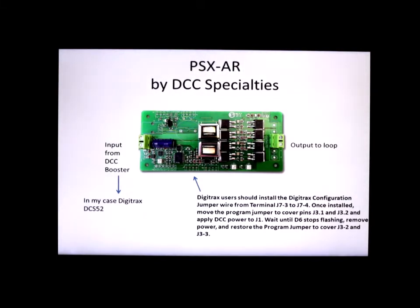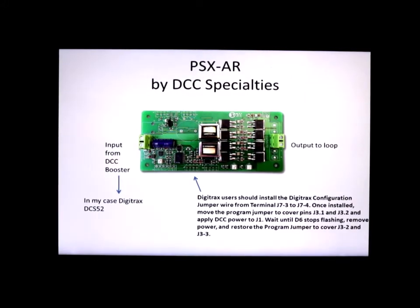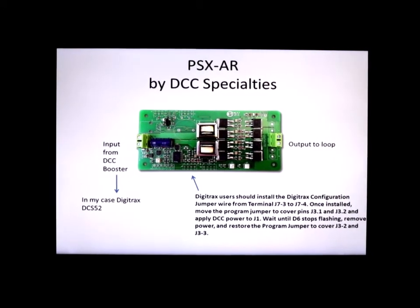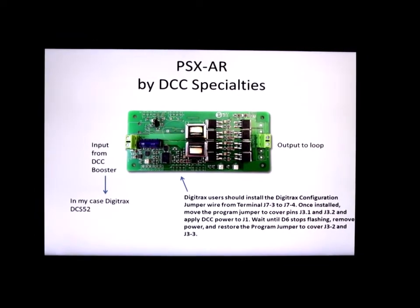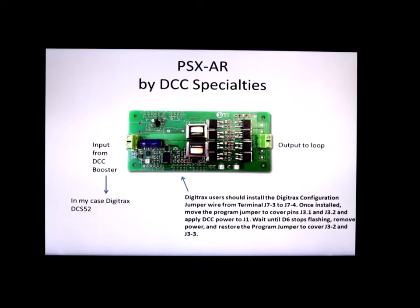There's also a note you can see here at the bottom which talks about setting up the system to work with Digitrax and how you can optimize it. That's pretty simple to do. You just install a physical wire jumper and then set the program jumper to program it and you're all set. The instructions are in the manual and once this is done you don't have to do it again. It's a one time shot.